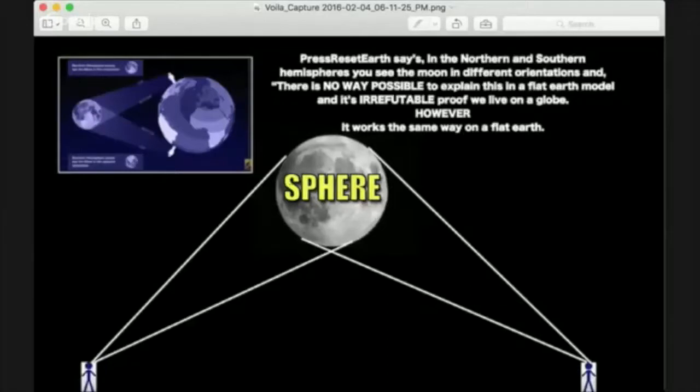So if that, how is it, how could this word sphere appear upside down to the other person on a flat surface? How could that ever happen on a flat surface?